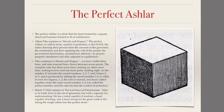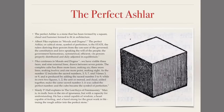But this has a little bit more going on in Masonic terms than that. Albert Pike explains in Morals and Dogma: the perfect Ashlar or cubical stone is a symbol of perfection. It's the state, the rulers deriving their powers from the consent of the governed, the constitution and law speaking the will of the people, the government harmonious, symmetrical, efficient — its powers properly distributed and duly adjusted in equilibrium.